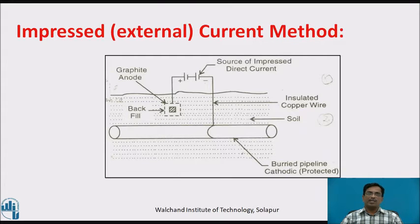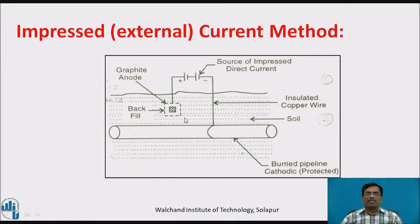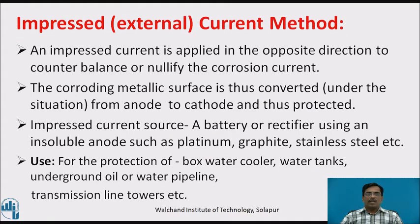The second method is the impressed or external current method. This diagram explains the impressed current method. Suppose this is a pipeline which is buried and needs to be protected. It is covered by soil, water, etc., so all favorable conditions for corrosion are present. To protect it using the impressed current method, the pipeline is connected to a source of current, and electrons are passed through the pipeline. An impressed current is applied in the opposite direction to counterbalance or nullify the corrosion current. The corroding metallic surface is thus converted from anode to cathode and gets protected.